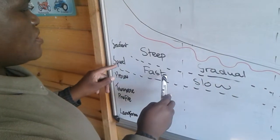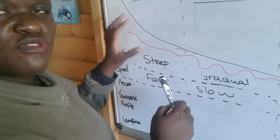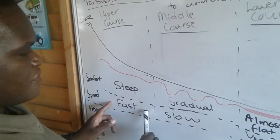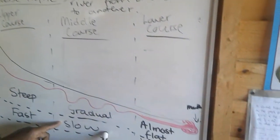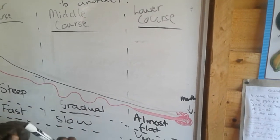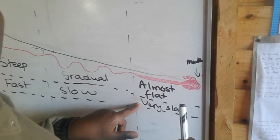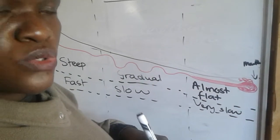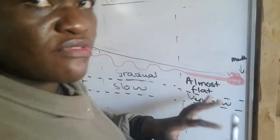In terms of the speed of the river, in the upper course the speed is very fast because the river is moving on a steep gradient. As it goes to the middle course, the gradient becomes gradual so it becomes slower. Then in the lower course the river is very slow because it has a lot of load and it is reaching the mouth.